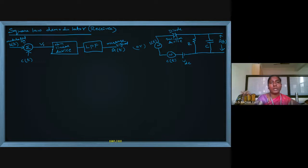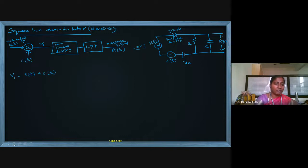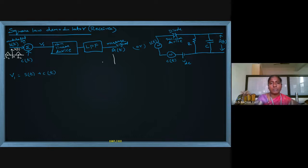If we take v1 as the input for the nonlinear device, v1 is nothing but s(t) plus c(t). If we see the spectrum, the modulated signal will show two triangles — one on the right side and one on the left side with respect to fc (at +fc and -fc). After the entire process, the original message spectrum will be the output.